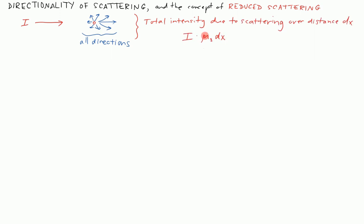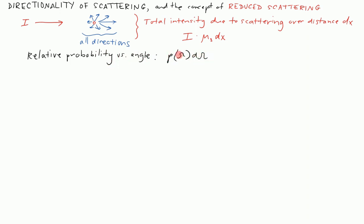We're no longer concerned with the total amount of scattering — that's given by mu_s. We want to talk about the direction of the scattering and the fact that it's not isotropic in all directions. We have to think about an expression that describes this distribution: a relative probability of scattering. The particle has scattered a photon — what's the relative probability that it goes in a particular angular direction? We name that relative probability P of solid angle omega times d-omega, where P is a probability density per unit solid angle.